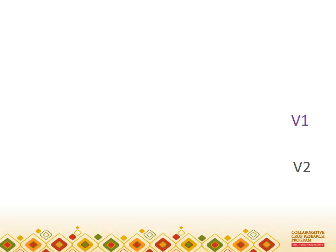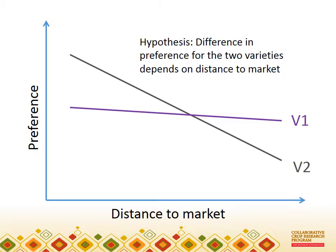I will try to explain the central idea by using a simple example. It is about crop varieties, and I have made it simple by considering just two varieties labelled V1 and V2. I am interested in how farmers' preference for these varieties depends on distance to market, and I have stated a hypothesis that I can represent as a graph.